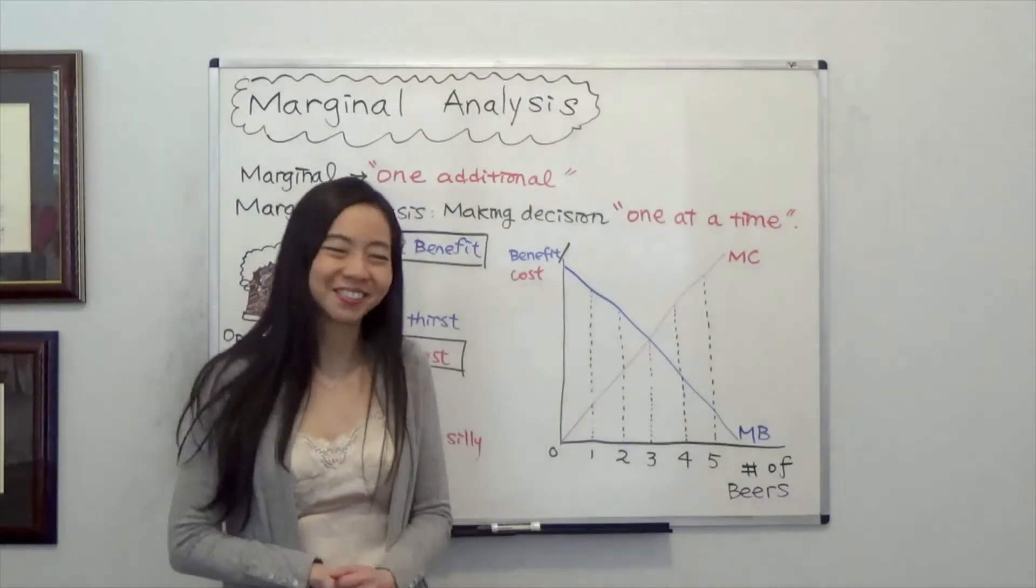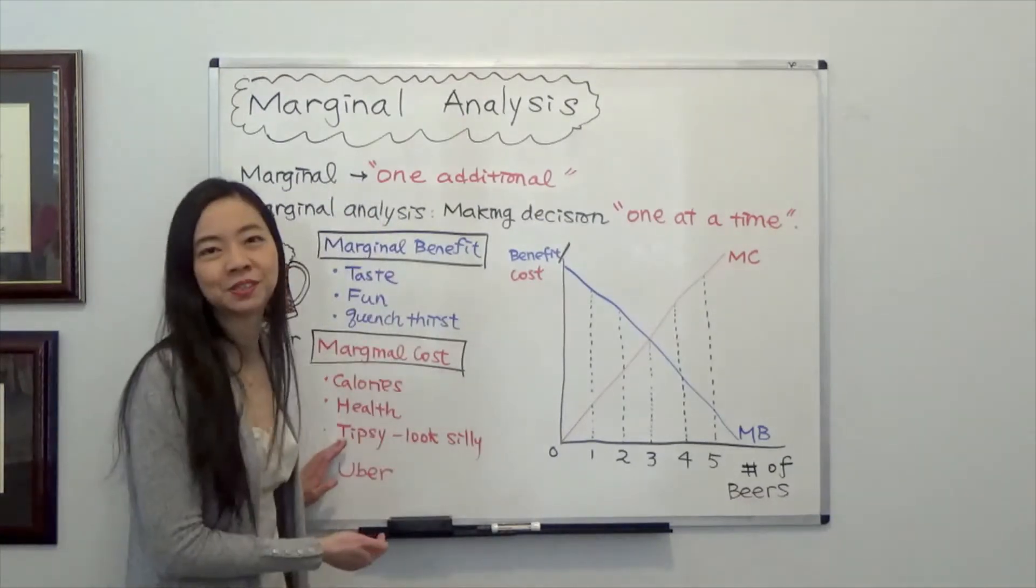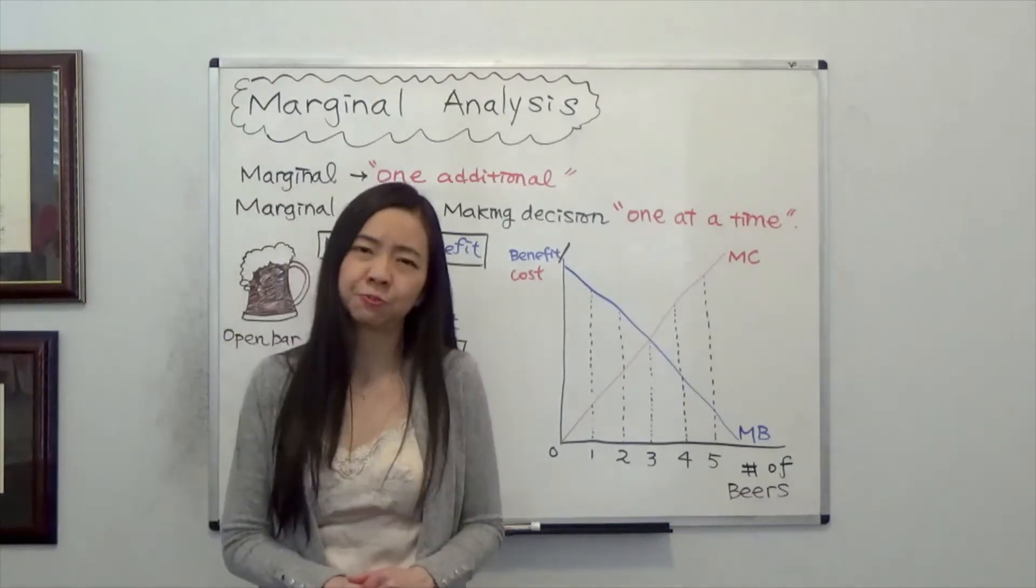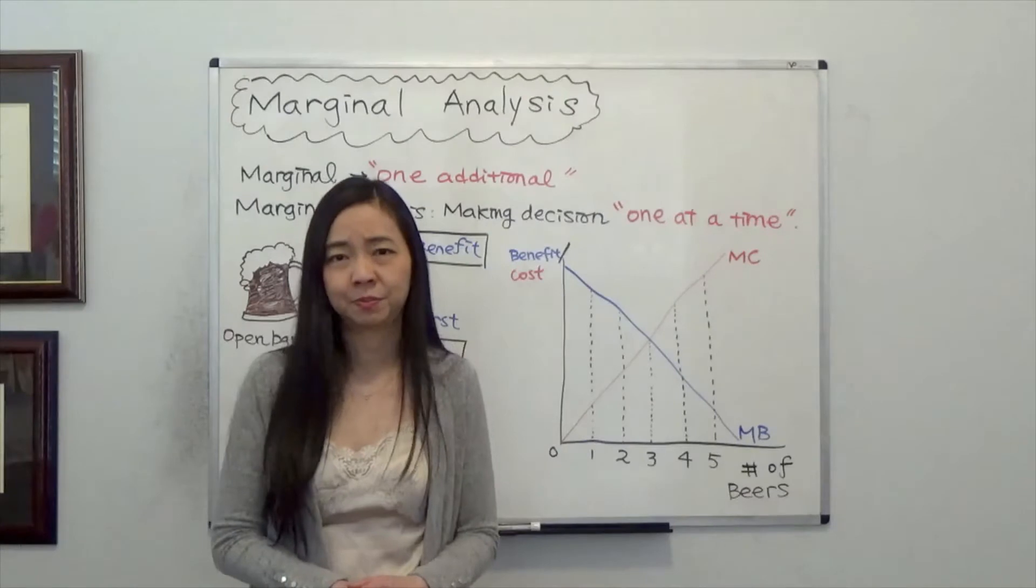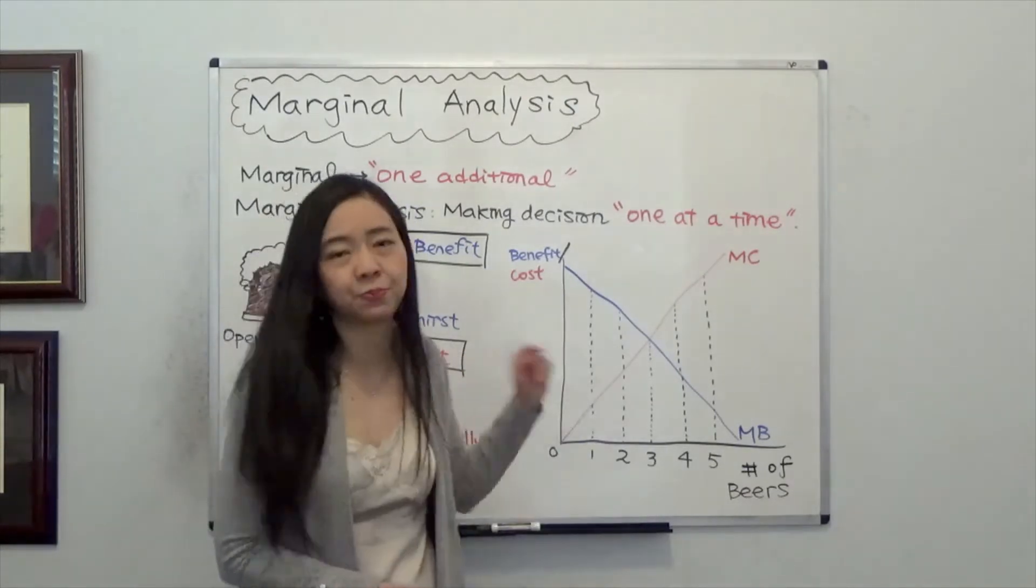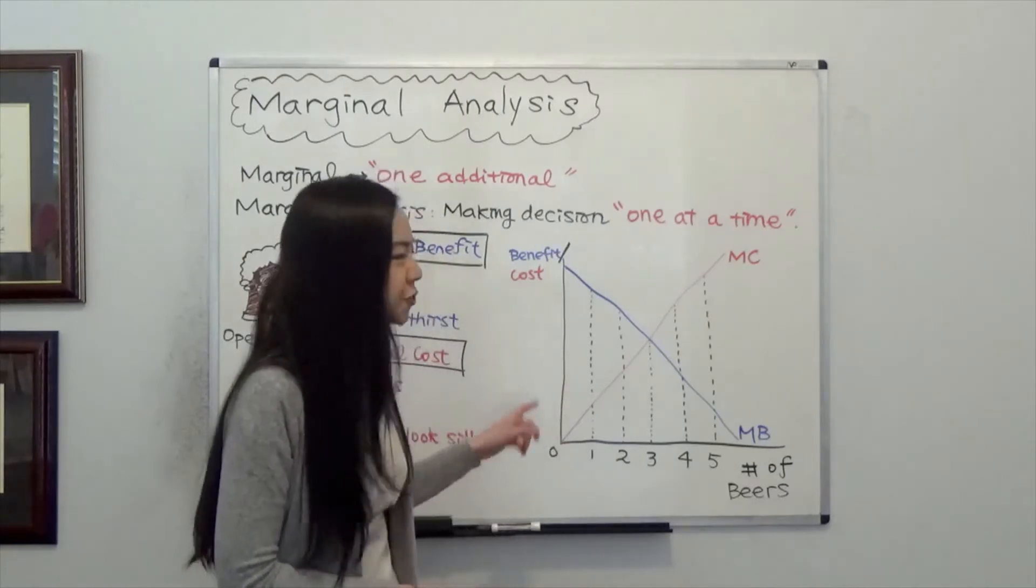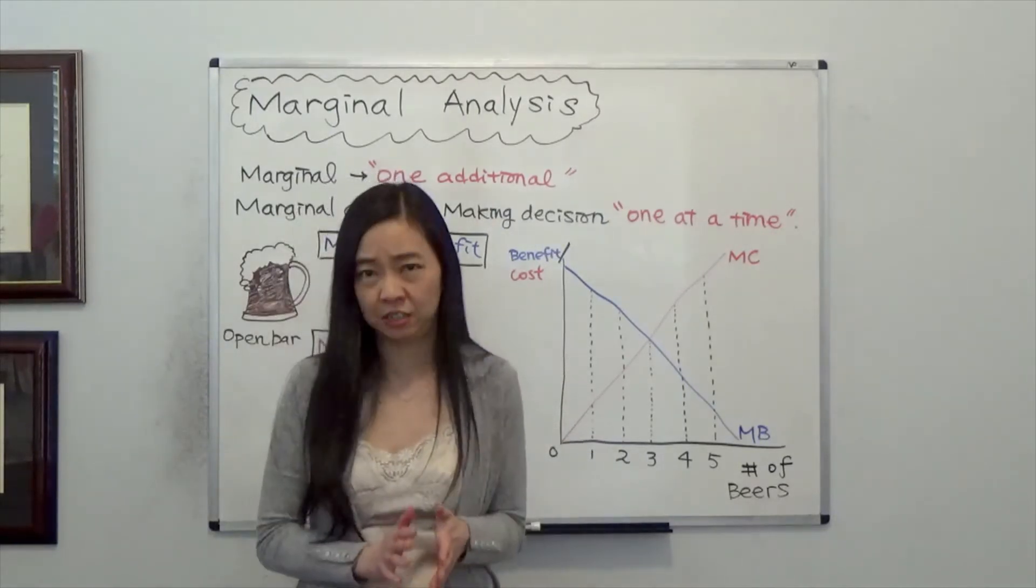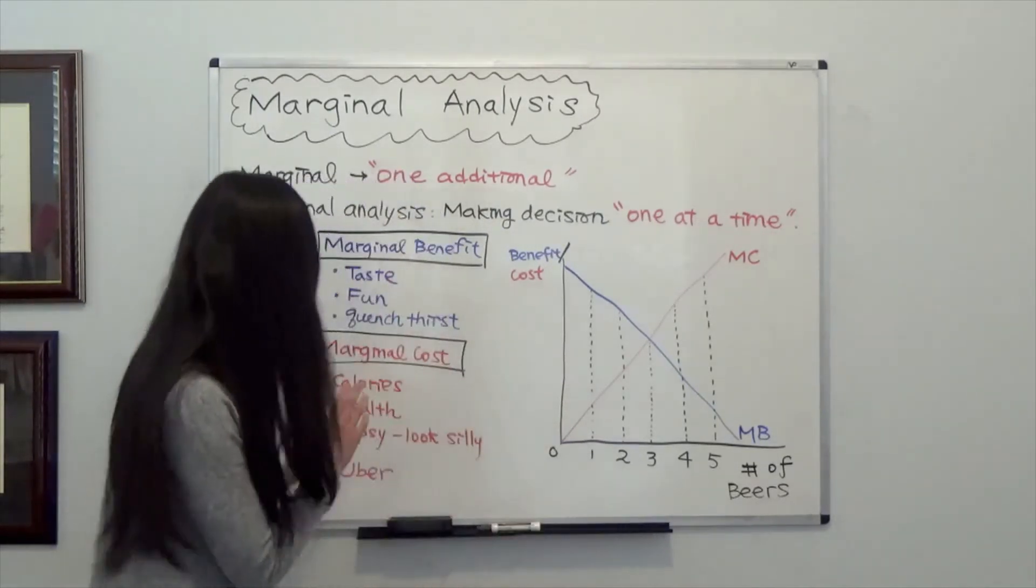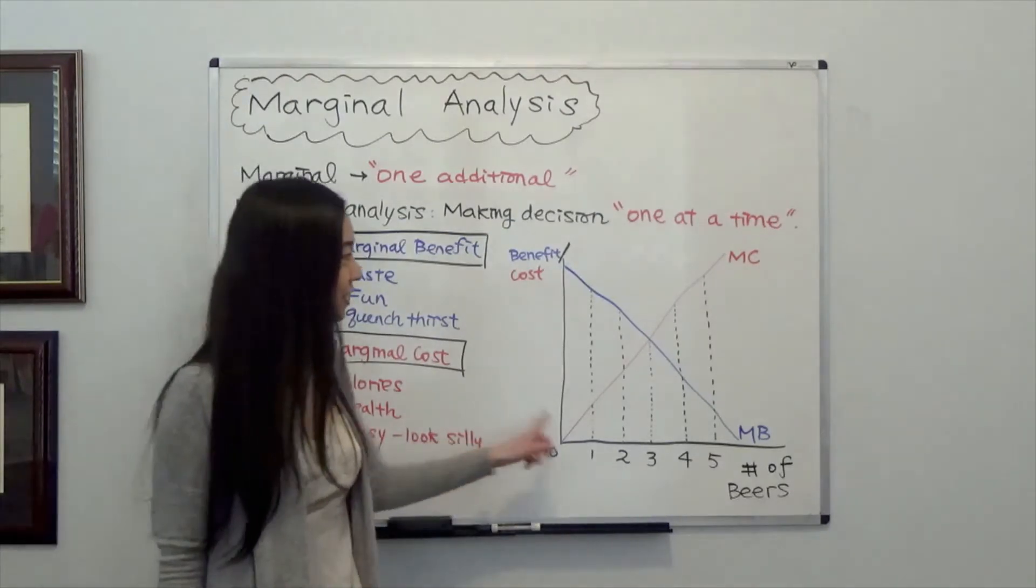What about the marginal cost? Well, let's think about being tipsy. When you drink the first can of beer, probably you don't feel anything. And the second can of beer, you start to feel something. And when you're drinking the third can, you probably start to feel dizzy already. So you can see that your marginal cost is going up.